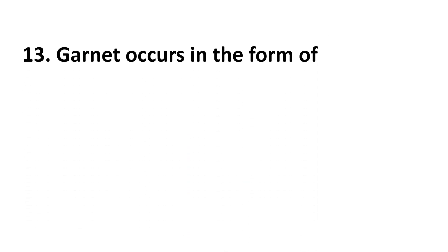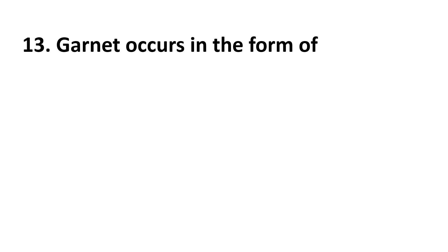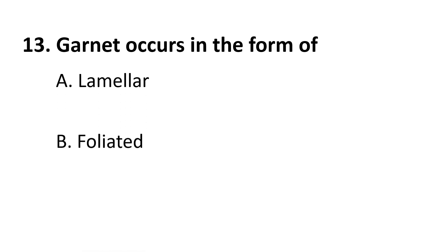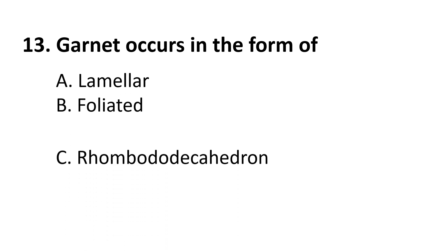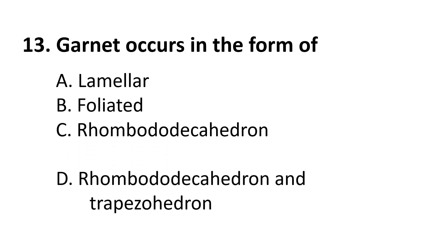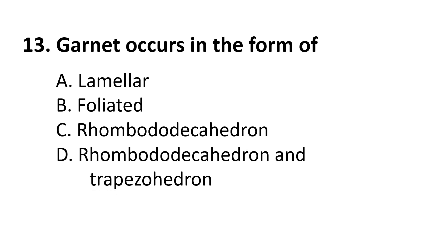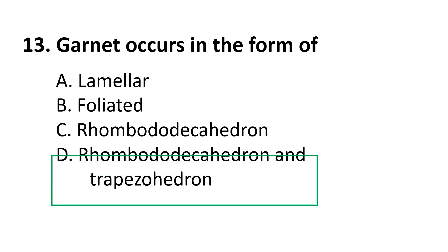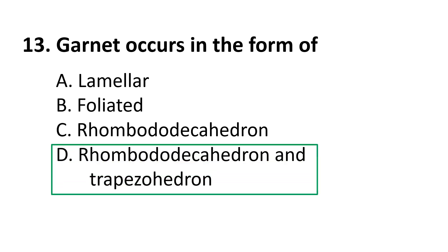Question 13: Garnet occurs in the form of — A. lamellar, B. foliated, C. rhombododecahedron, D. rhombododecahedron and trapezohedron. The correct answer is D — garnet occurs in the form of both the rhombododecahedron and trapezohedron.